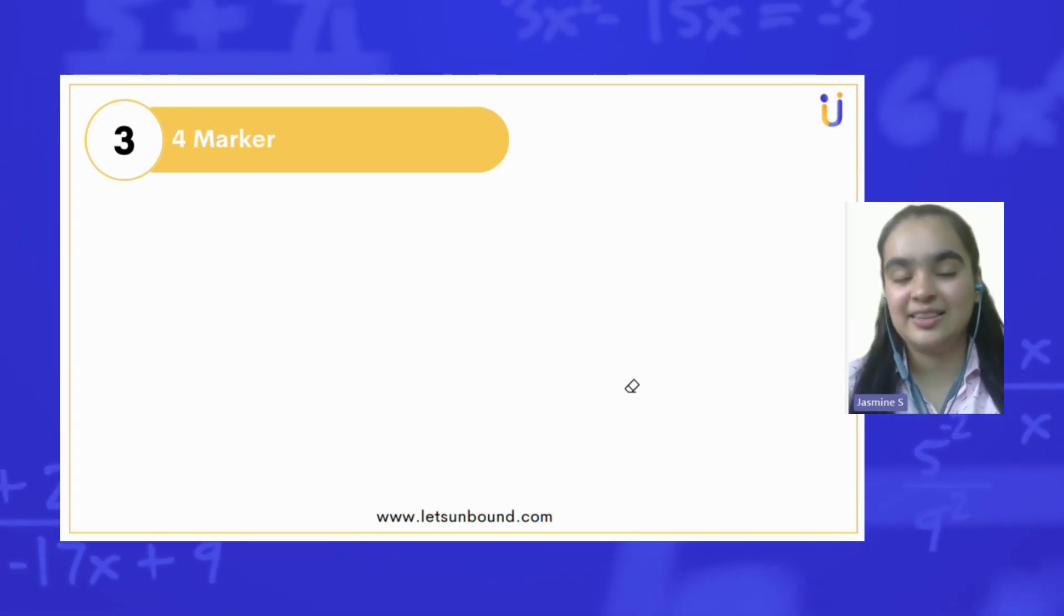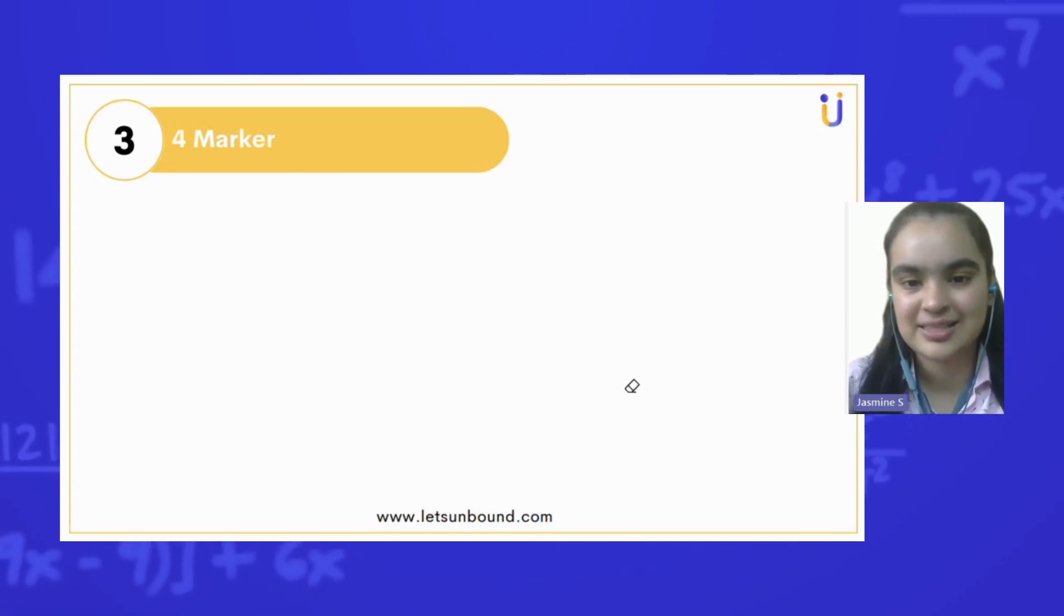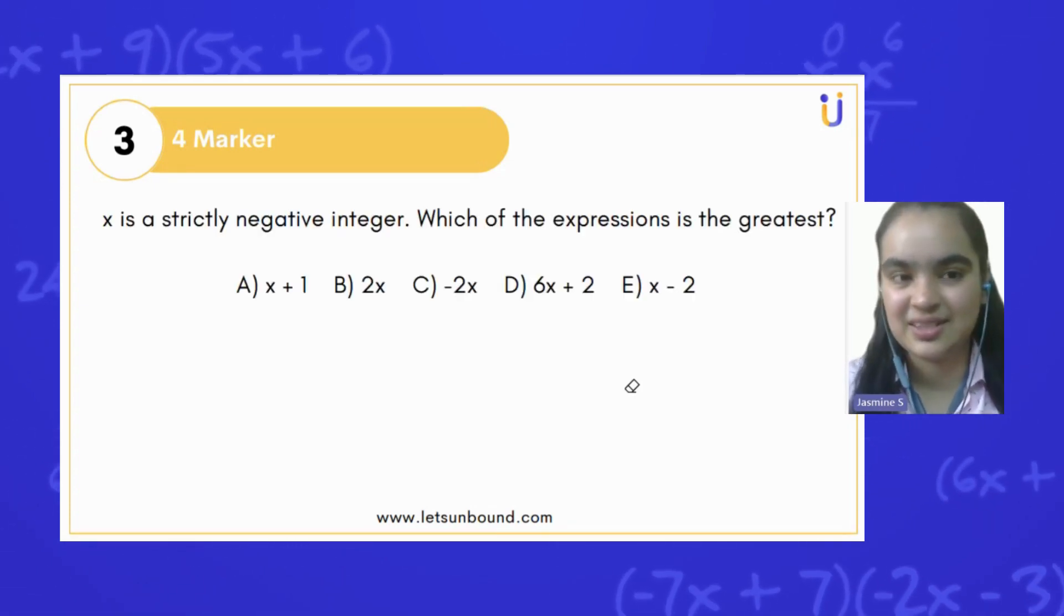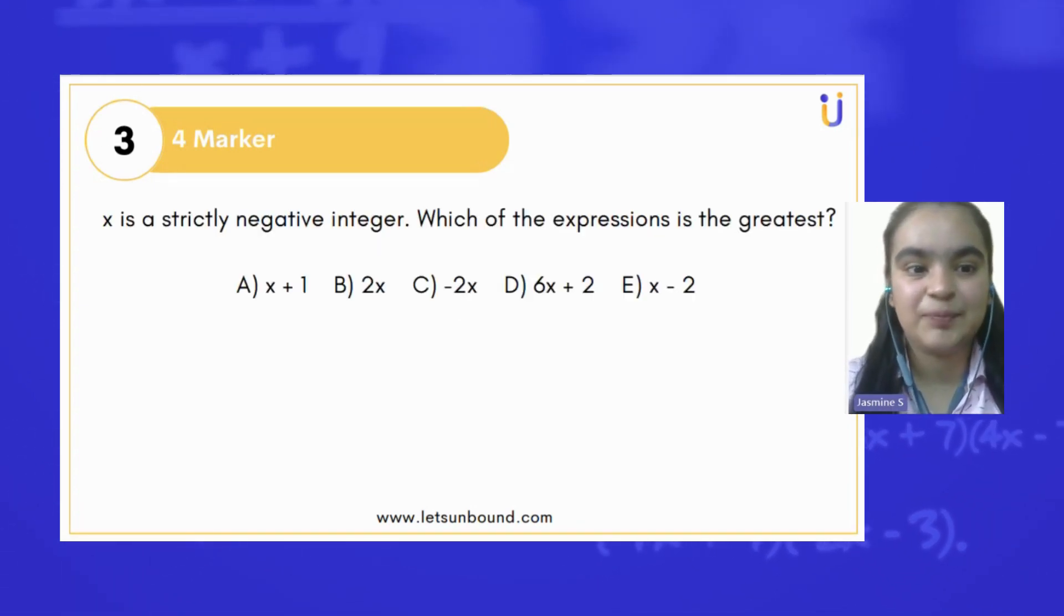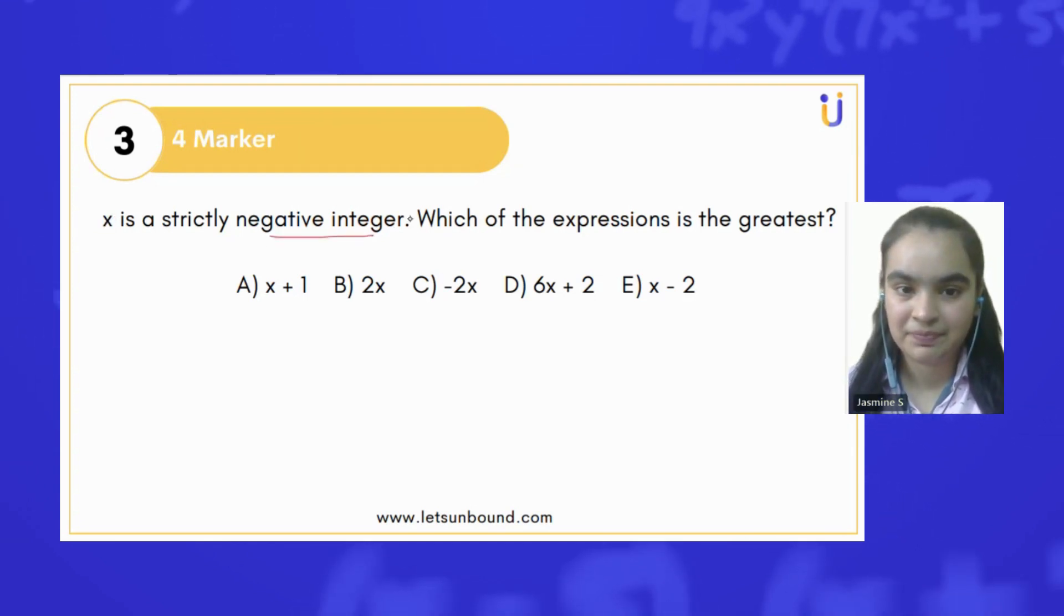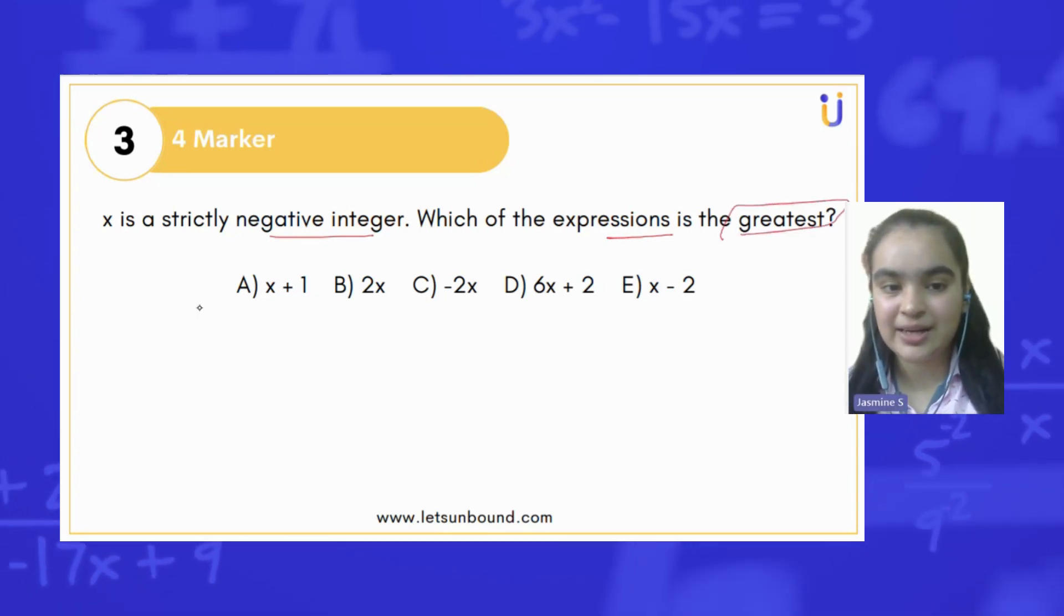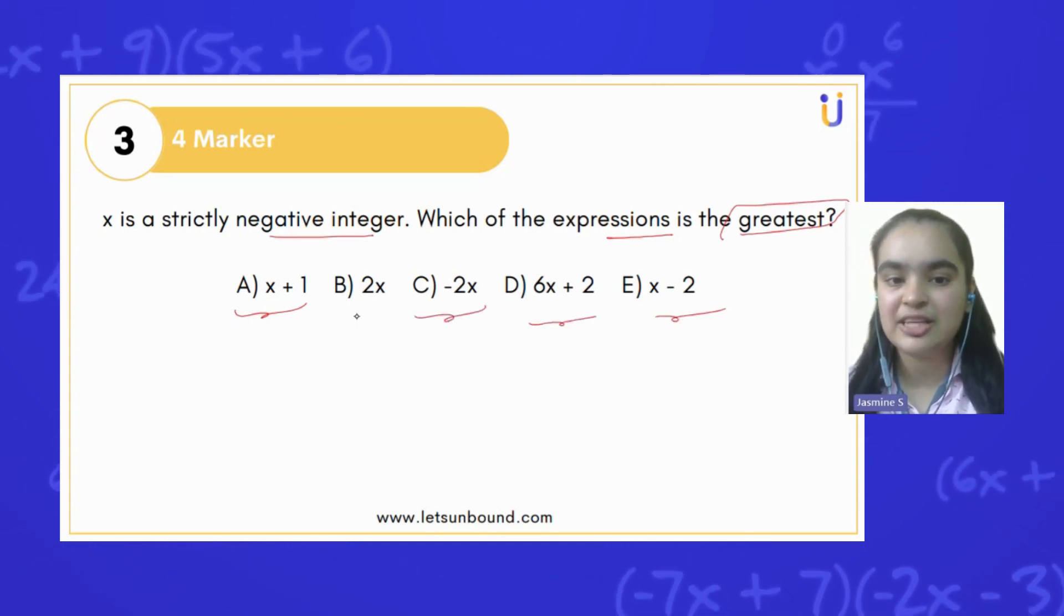This question is worth four marks. The question is: x is a strictly negative number. Which of the expressions is the greatest? They have provided us five expressions, and out of these one will be the greatest.